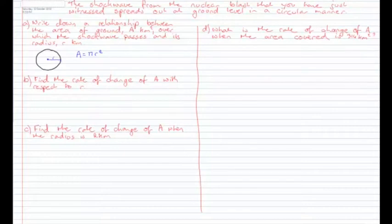Part B: find the rate of change of A with respect to R — which just means differentiate. We have A = πR², therefore dA/dR = 2πR. When we drop the power of 2 by 1 you get to the power of 1, so you just write 2πR.